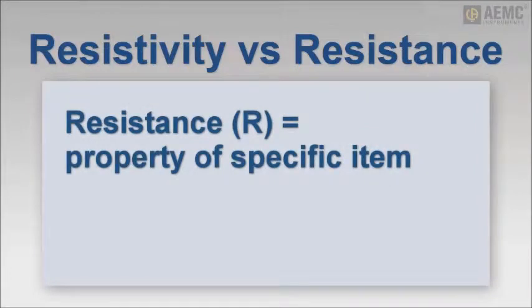In this video, we refer to both soil resistivity and soil resistance. To avoid possible confusion, it's important to have a basic understanding of what these terms mean and how they differ. Simply put, resistance, represented by the letter R, is a property of a specific physical item of definite size and shape, while resistivity, represented by the Greek letter Rho, is a general property of a material irrespective of its shape and size.